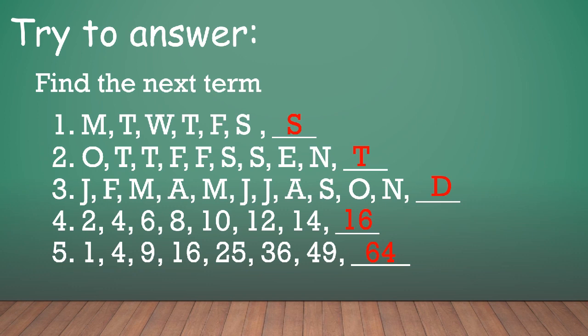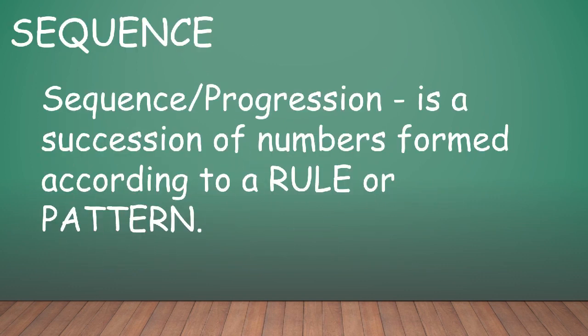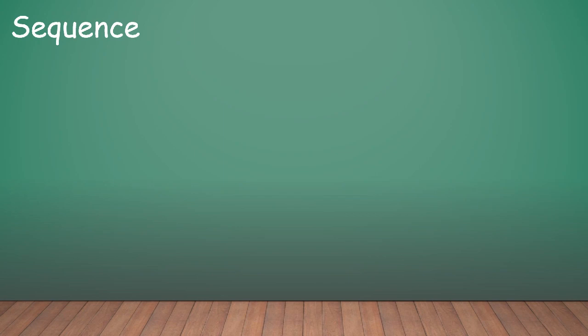Which will lead us to our topic which is sequence. By definition, sequence or progression is a succession of numbers formed according to a rule or pattern. So the keywords are rule or pattern. So let's take our example a while ago: 2, 4, 6, 8, 10, 12, 14. So notice that you're able to find the next number to this set of numbers which is 16 because this set of numbers are actually following a pattern which is adding 2. So that's an example of a sequence.